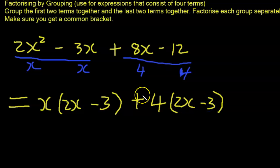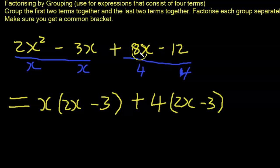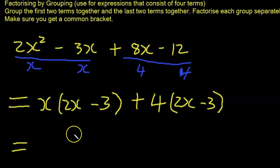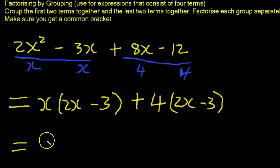You can always do a quick check: x times 2x is 2x², x times minus 3 is minus 3x. For the other pair: 4 times 2x is 8x, 4 times minus 3 is minus 12. Remember, factorizing means to rewrite, so when you expand the bracket you must get the original expression. Lastly, make sure you get a common bracket — here the common factor is (2x minus 3).